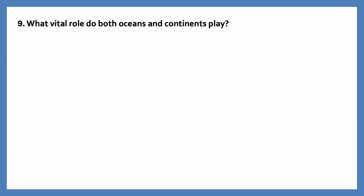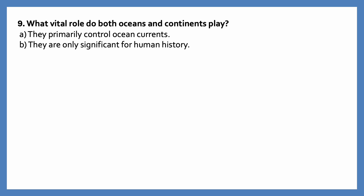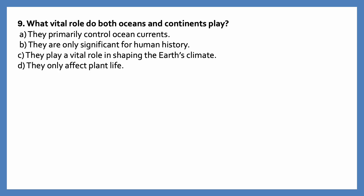What vital role do both oceans and continents play? Options are: they primarily control ocean currents; they are only significant for human history; they play a vital role in shaping the earth's climate; they only affect plant life. The correct answer is they play a vital role in shaping the earth's climate.